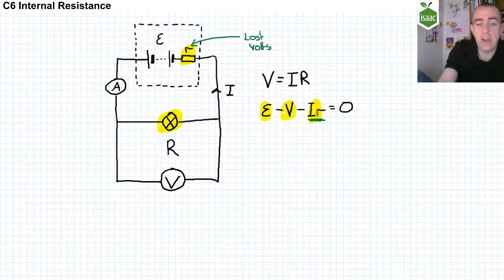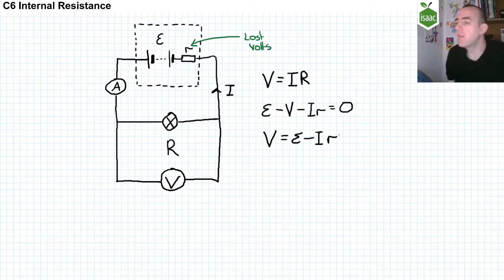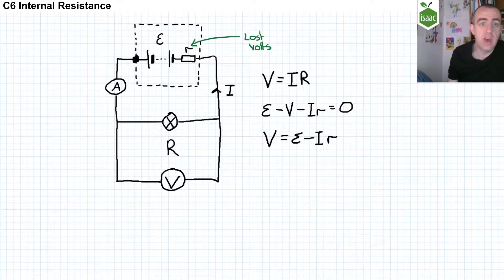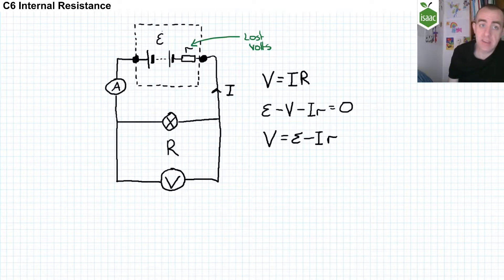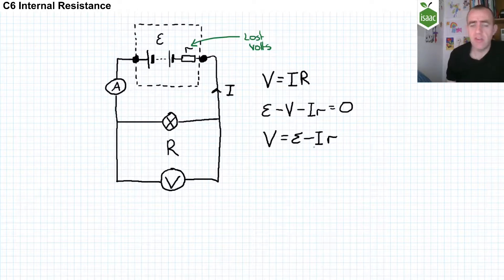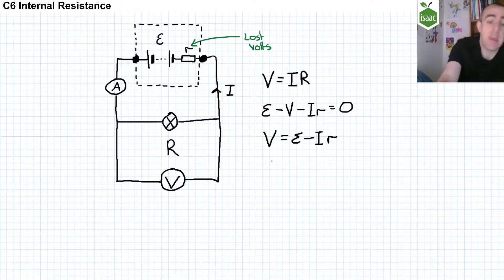That's just Kirchhoff's second law. You can rearrange this equation in any format you want. For example, V, the terminal voltage — that's the potential difference between the two terminals of the power supply — is going to be equal to epsilon, the EMF, minus the lost volts Ir, where r is the internal resistance. This equation shows us that when I equals zero, V equals the EMF.